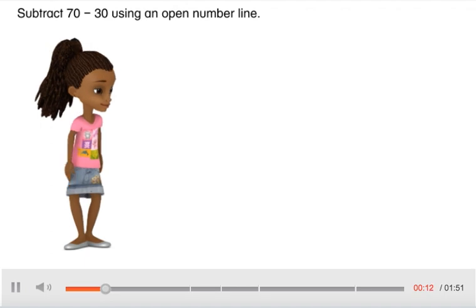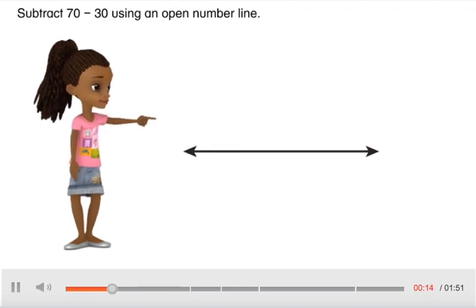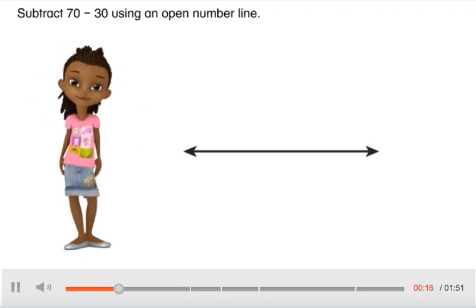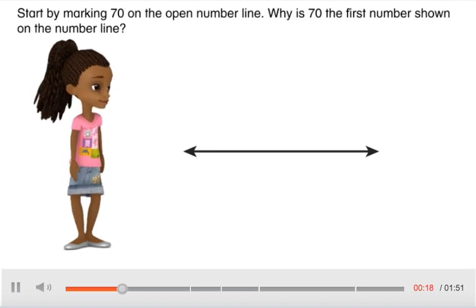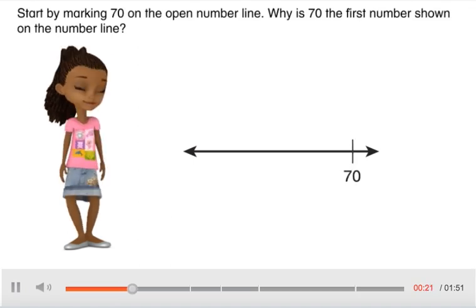Subtract 70 minus 30 using an open number line. Start by marking 70 on the open number line.